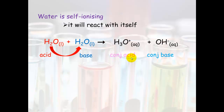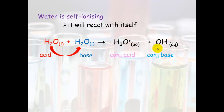The hydronium will be the conjugate acid of the base water molecule, because it has gained one hydrogen from the other water molecule. The hydroxide will be the conjugate base of the acid water molecule, because it has lost one hydrogen.